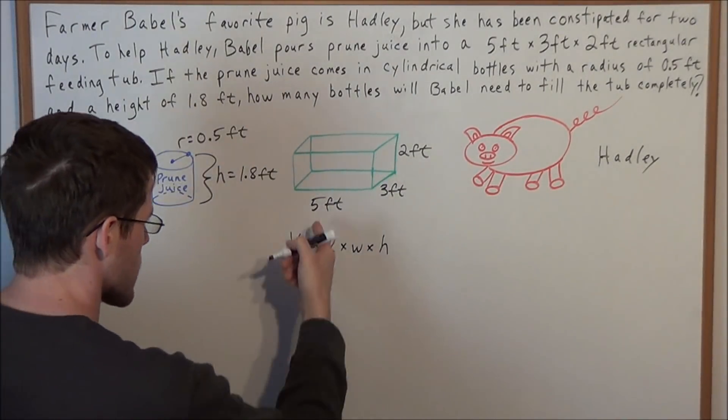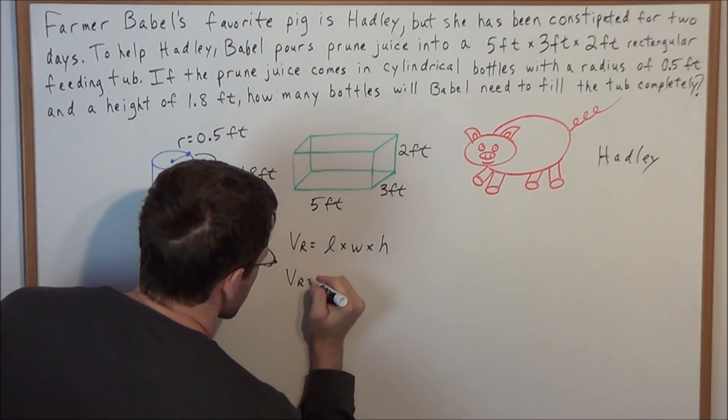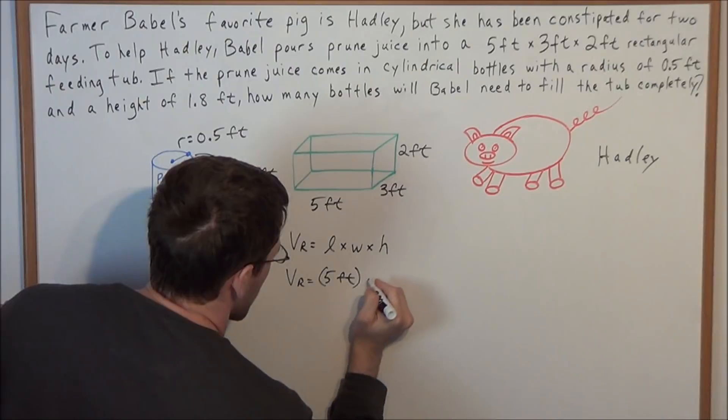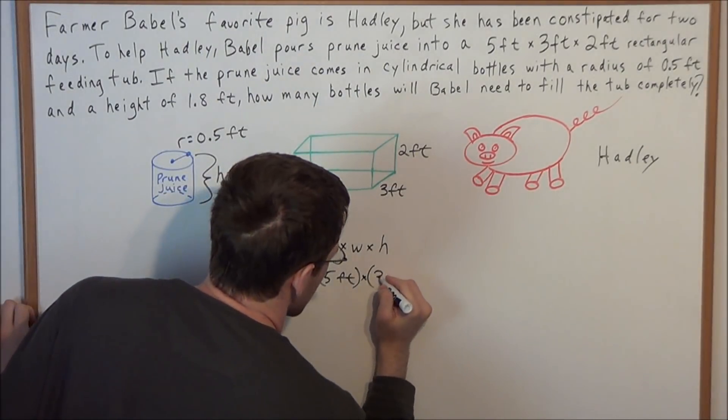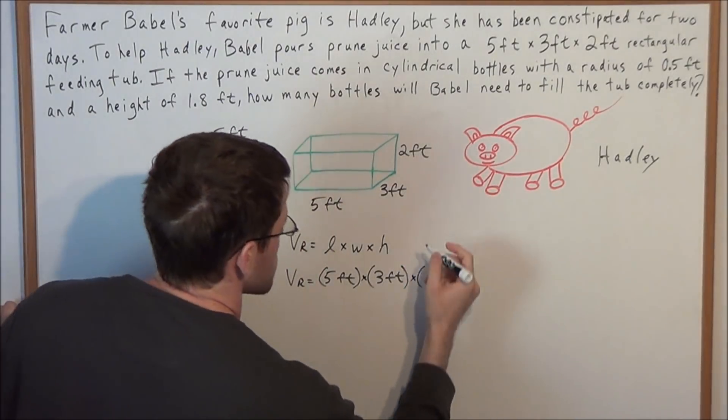So now we know that the length of this rectangular feeding tub is 5 feet, so now we can start substituting. We have a length of 5 feet, and we're going to multiply that by the width, which is 3 feet, and finally we can multiply that by the height, which is 2 feet.